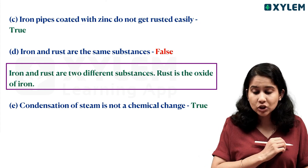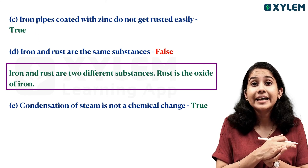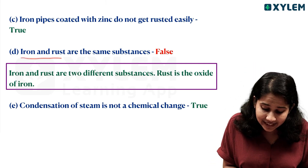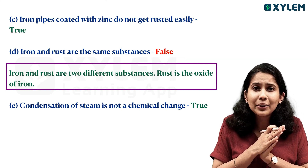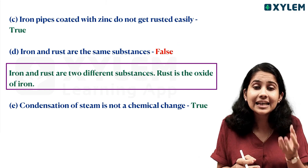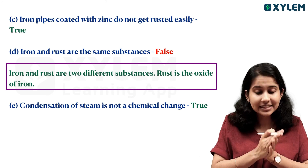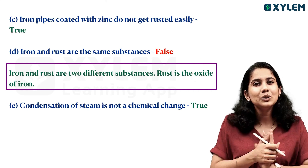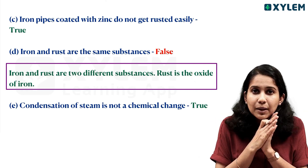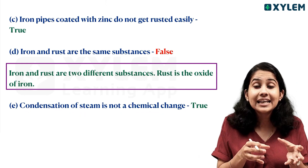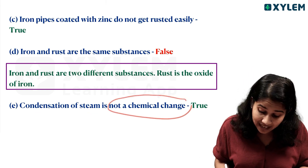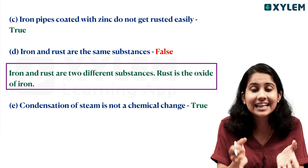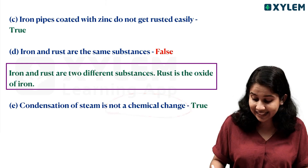Iron pipes coated with zinc do not get rusted easily — that is true. Iron and rust are the same substance — that is false, because rust is a new substance formed from iron reacting with oxygen. Condensation of steam is not a chemical change — that is true.